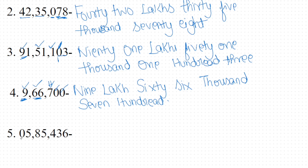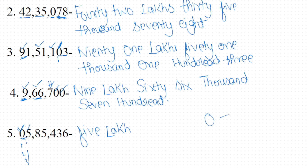The 5th example: 0 and 5 are in the lakh position. Since 0 is there, we don't write anything for it — there is no number name for 0. So we only write 5 lakhs. Then 8 and 5 are next — so we write 85. The result is 5 lakh 85.